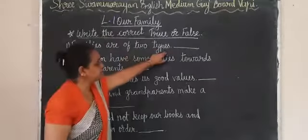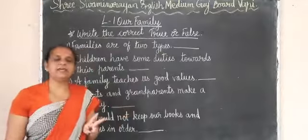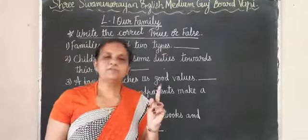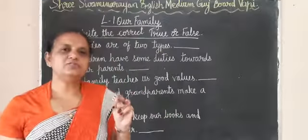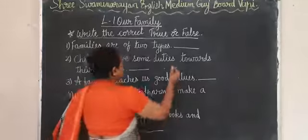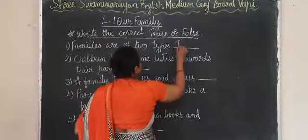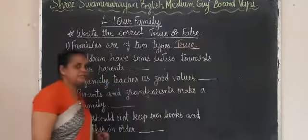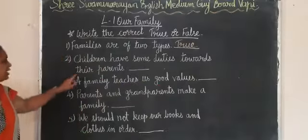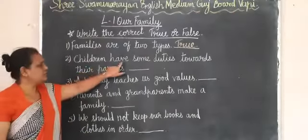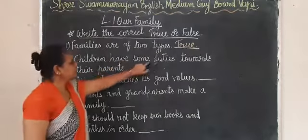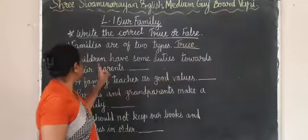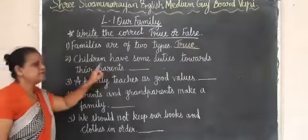Families are of two types — is that true? Yes, true! How? Big family and small family. So families are of two types, therefore you have to put True.